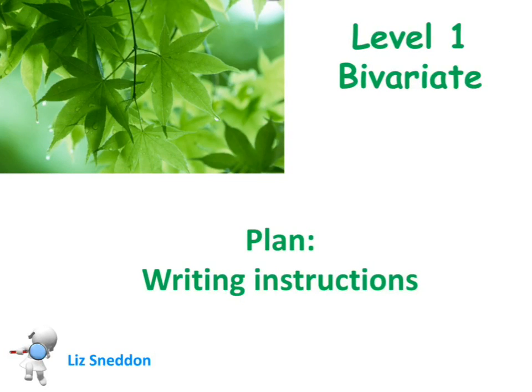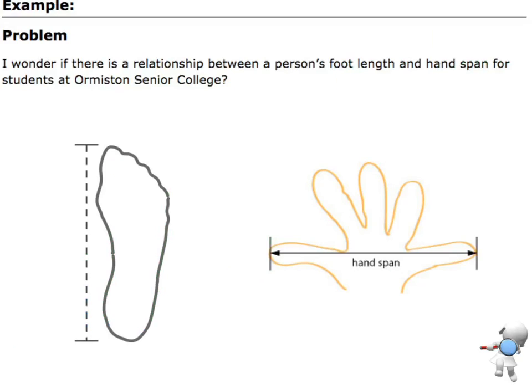Let's have a look at how we can write instructions for our bivariate at level 1. So the example that we're looking at here is the question about whether or not there's a relationship between a person's foot length and their hand span.